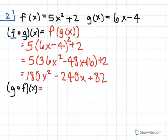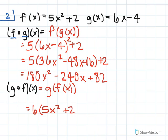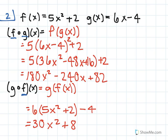Now for g of f of x, we're going to plug f of x in for our x value in the function for g. So we'll have 6 times the quantity 5x squared plus 2, minus 4, and that simplifies to 30x squared plus 8. So again, with composition of functions, we're just plugging in the second function into the first function for all of our values of x.